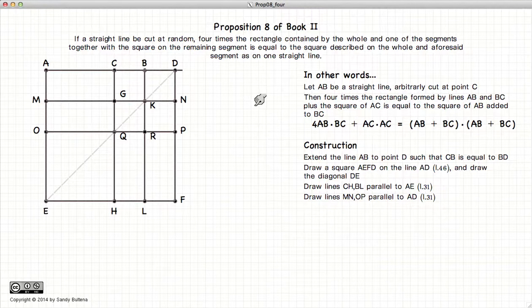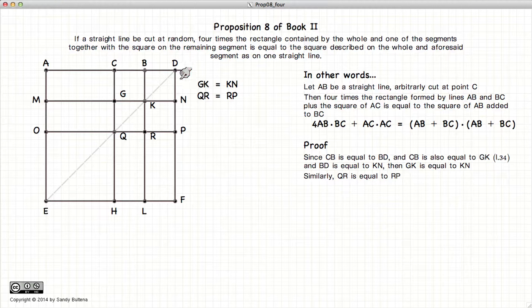Now the first thing we're going to discuss is the qualities of all these lines. So we know that CB is equal to BD because we constructed it that way. GK is equal to CB because they are the opposite sides of a parallelogram. And BD is equal to KN because it is also opposite sides of a parallelogram, which gives us that GK is equal to KN. And by the same argument, QR is equal to RP.